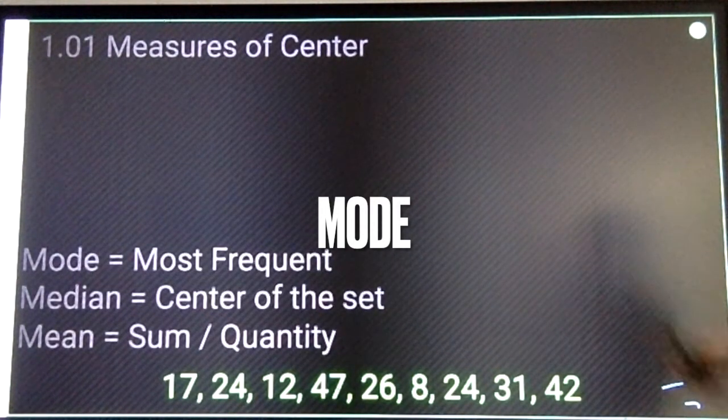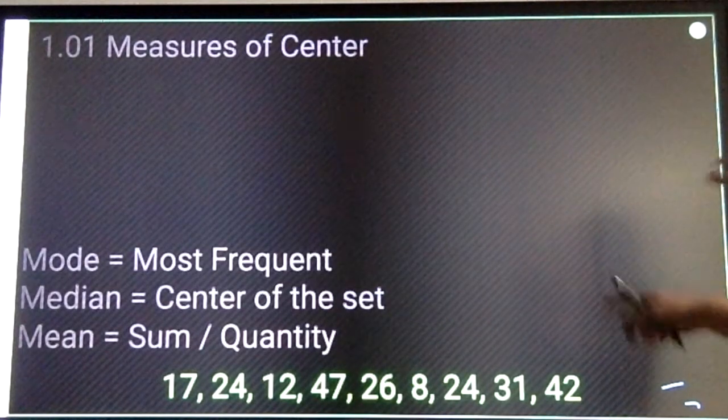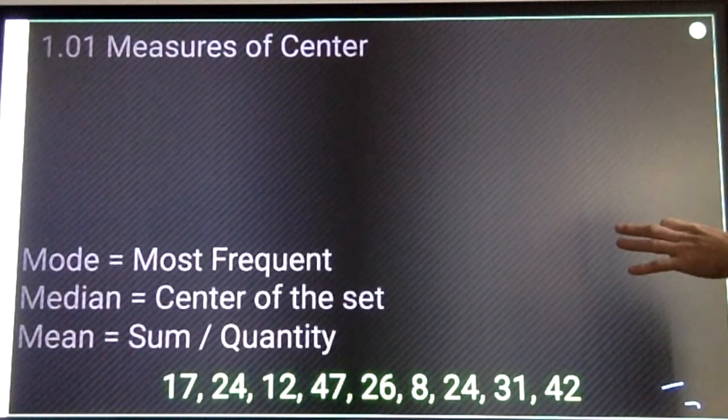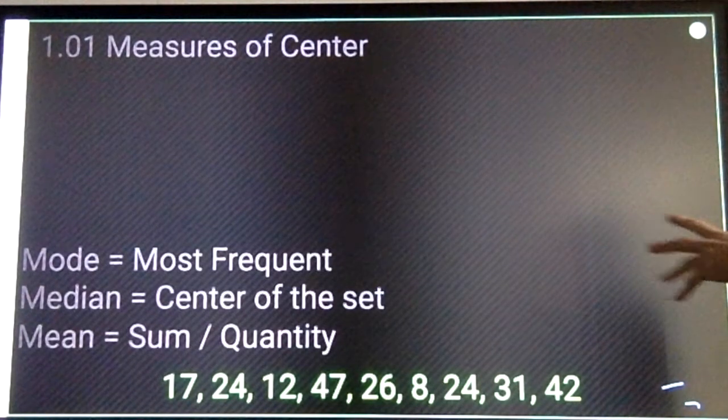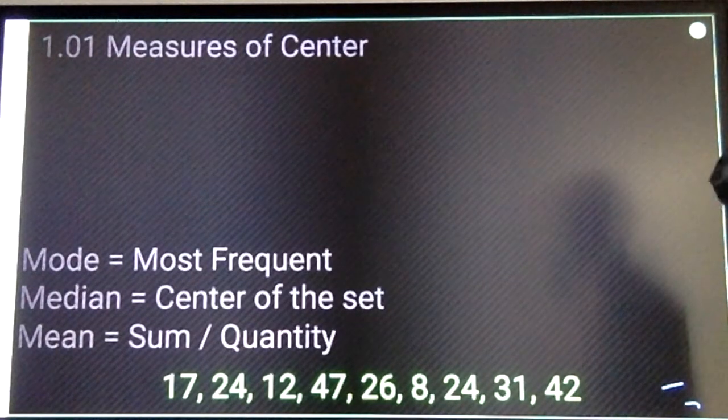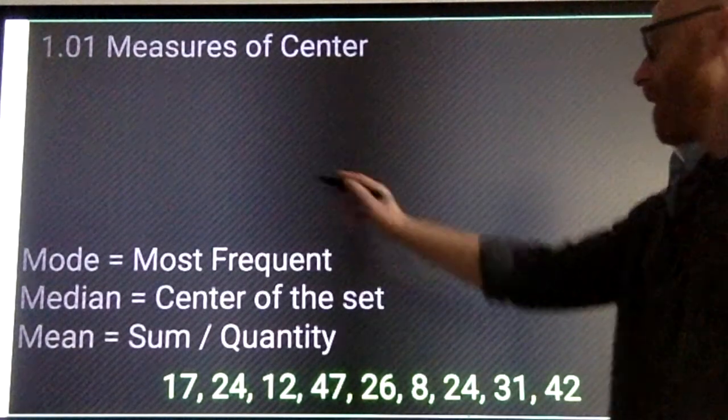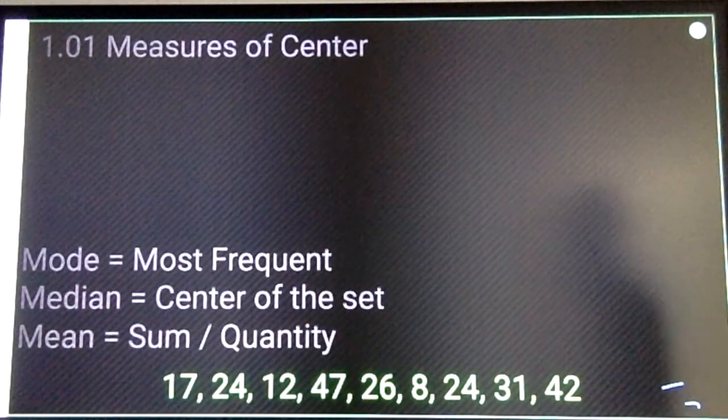In this particular set, you can look through. We got a 24, we got two 24s. Everything else, there's only one of it, so 24 would be the mode, the most frequently occurring number in a set.